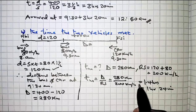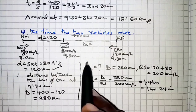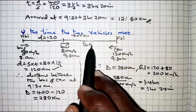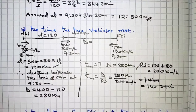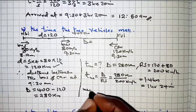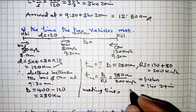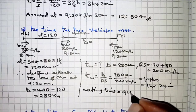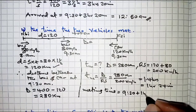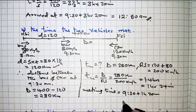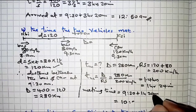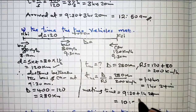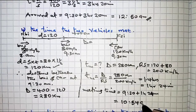This 1 hour 24 minutes is the time taken by both the car and the bus to meet each other, measured from 9:30 a.m. So the meeting time is 9:30 a.m. plus 1 hour 24 minutes — that is 10:54 a.m.